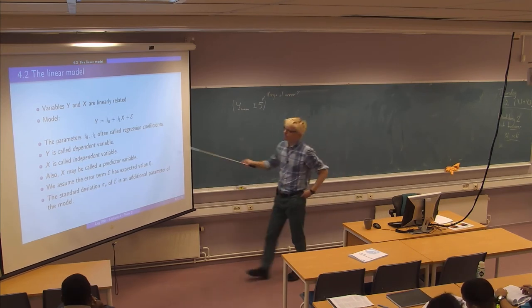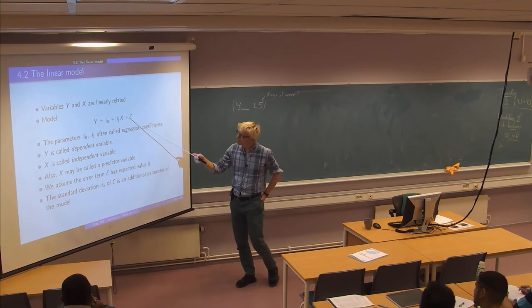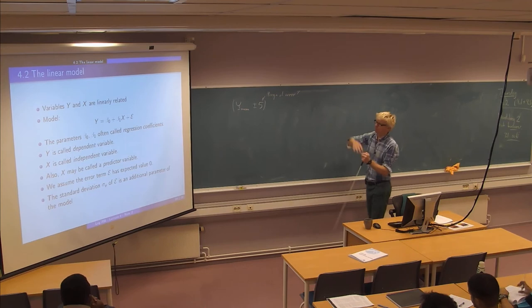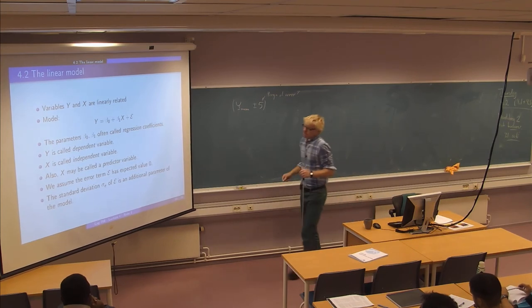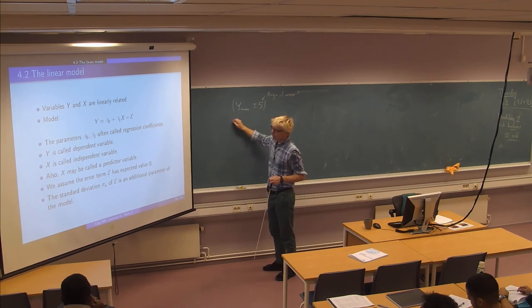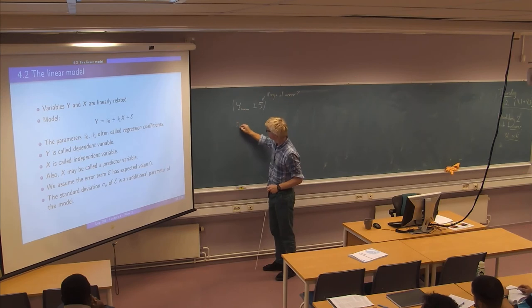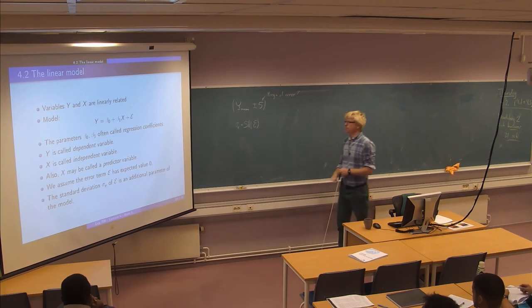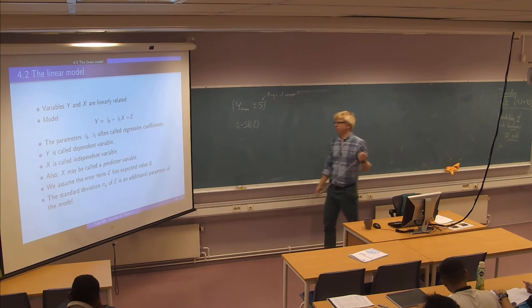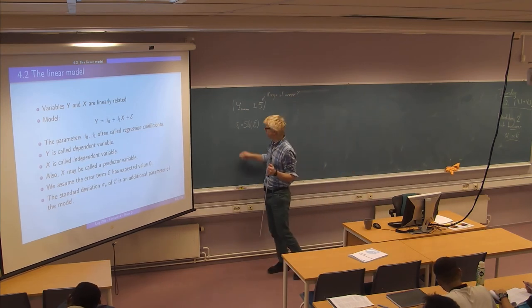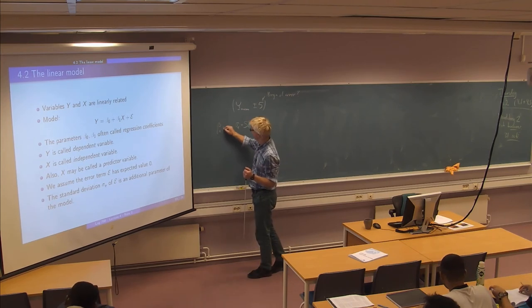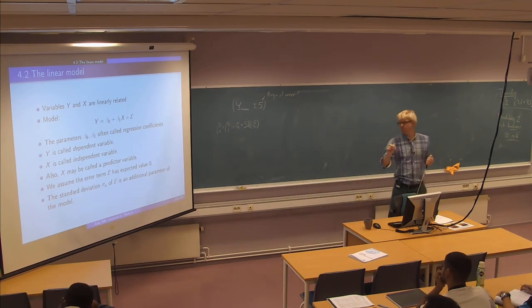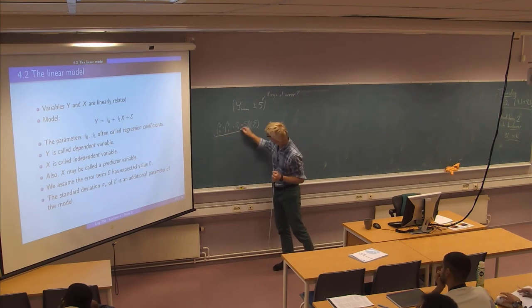So as I said we look at this random term here. And if our linear model is correct, this error term should have expected value 0. So it should be equally likely to be above as below the line. One very important additional parameter to this model is what we call sigma e. That's the standard deviation of this error term. So you have three parameters actually. We have beta 0, beta 1 which are the regression coefficients and this standard deviation of the error term. Those are the three parameters in this model.